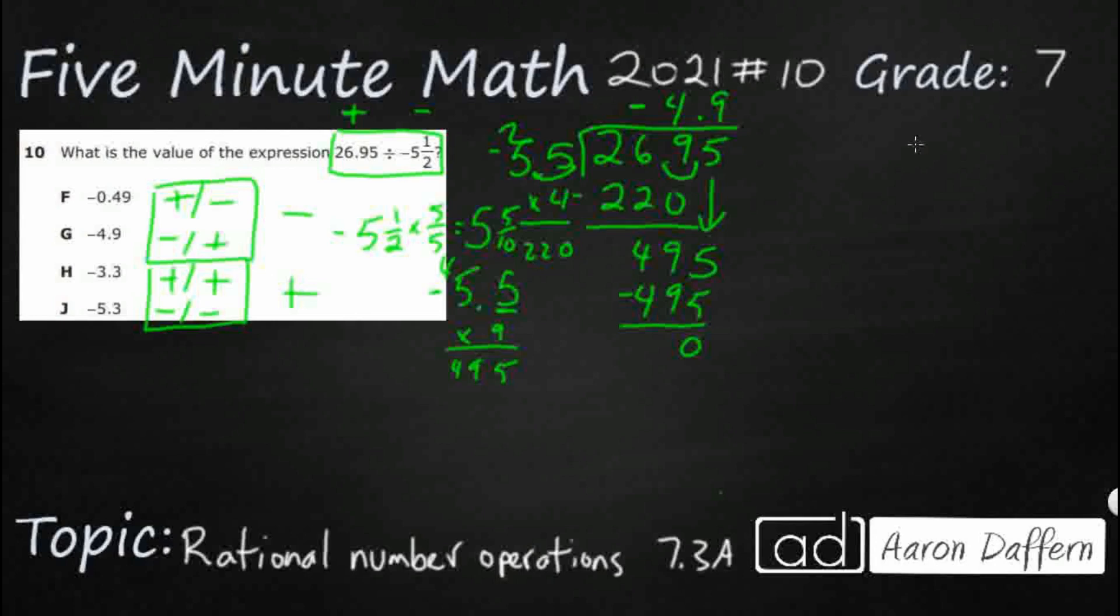How can we do that by turning both into fractions? Well, we've already got negative 5.5 as a fraction. So let's look at 26.95. How do we turn this into a fraction? Well, this is really 26, let's make that 26 because that's exactly what that is, 95 hundredths. So let's do 95 over 100.